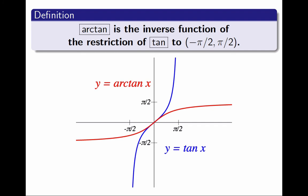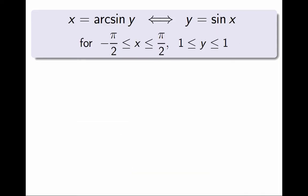Since they are inverses of each other, we can obtain one by reflecting the other with respect to the diagonal of the first and third quadrants. And just like we could summarize everything we needed to know about arcsine by this statement, we can do the same thing for arctangent.